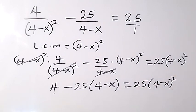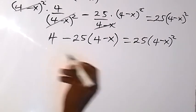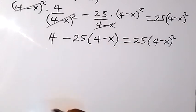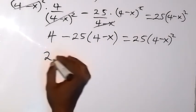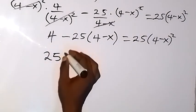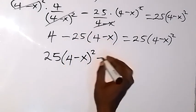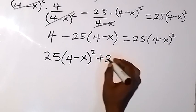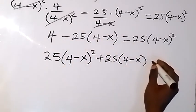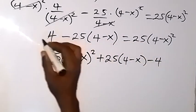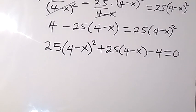From there we can rearrange by taking this side to this side so that one side is left with 0. When we do that, we have 25 into 4 minus x squared, then plus 25 into 4 minus x. After taking minus 25, then minus 4, plus 4 becomes minus 4, then equals to 0. So we have this now.